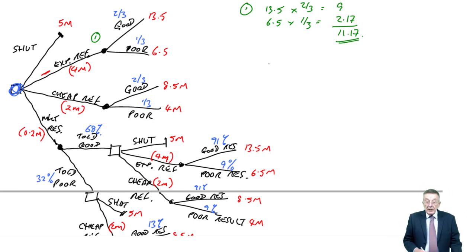And so, I'm now going to say that if we do do expensive, we will pay out four million, but we'll get an expected 11.17 million. So, I can now forget the 13.5, the six and a half. Effectively, my choice so far is either shut and get five million, or do expensive, which gives us 11.17 minus four million, it will give us 7.17 million.